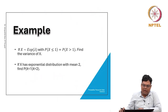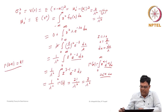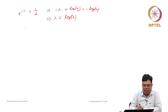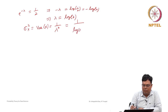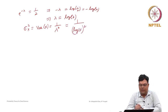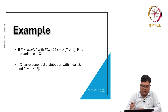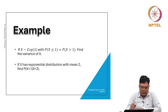Now that we know lambda = log(2), the variance of X is 1/lambda^2 = 1/(log 2)^2. This is one example using the exponential distribution.